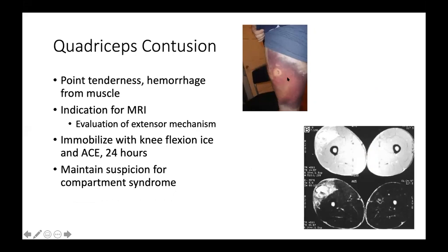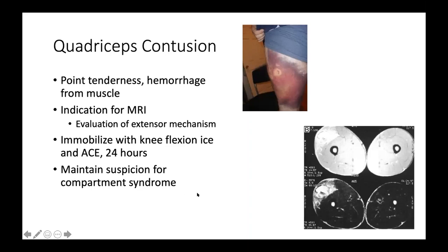If a patient is unable to do any extension of their leg, that is an indication to do an MRI to evaluate the extensor mechanism. On T2 MRI, where fluid is bright, you can see fluid collected in the quadriceps muscle. Treatment includes immobilization in knee flexion, ice, and ace wrap. An important consideration is compartment syndrome — if someone has a tense, swollen compartment with numbness, tingling, or significant pain, they need emergency room evaluation immediately, as this can be a devastating injury.